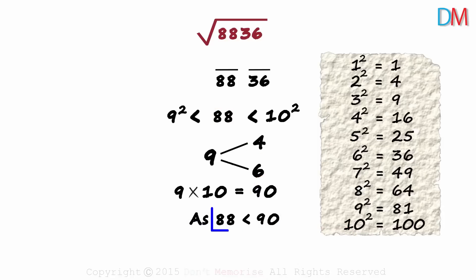As 88 is less than 90, we can say that the square root of 8836 is 94 and not 96.